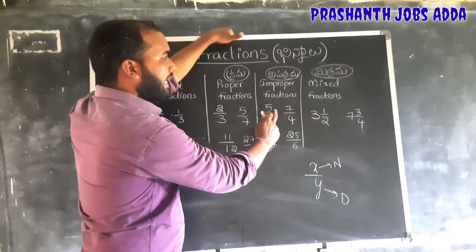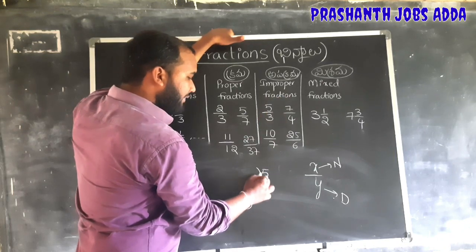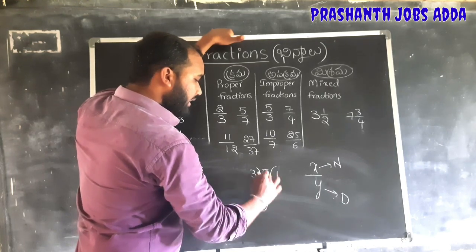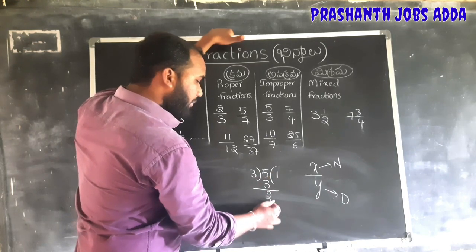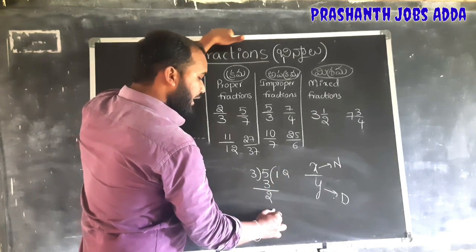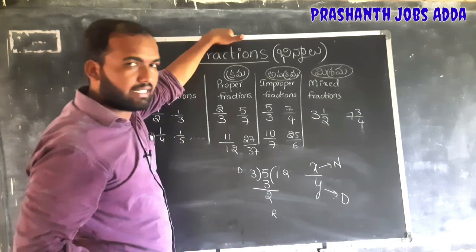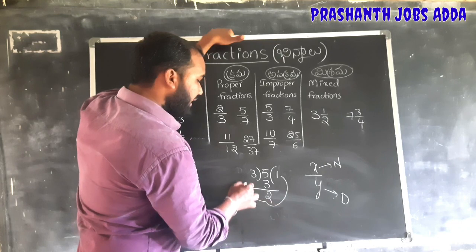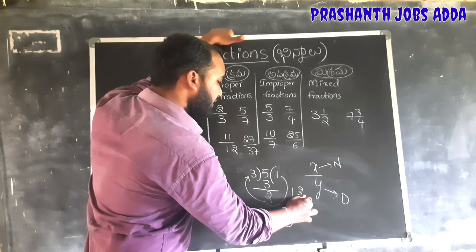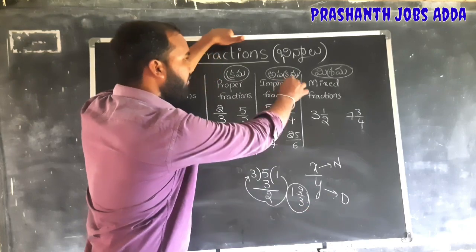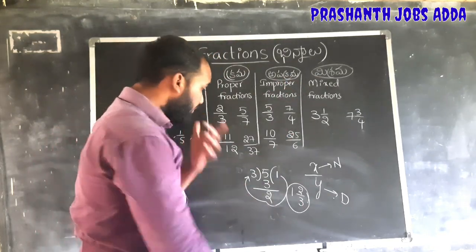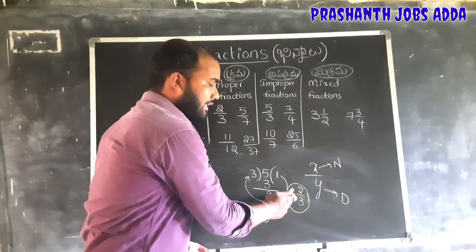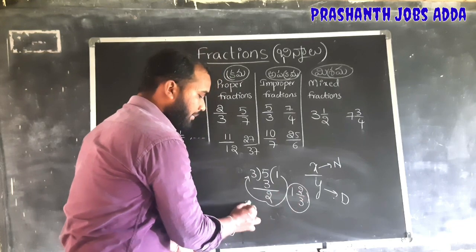For example, the improper fraction 5 by 3 — divide 5 by 3. 3 goes into 5 once; quotient is 1, remainder is 2, divisor is 3. Going clockwise, this gives us 1 and 2 by 3. So 5 by 3 as a mixed fraction is 1⅔.